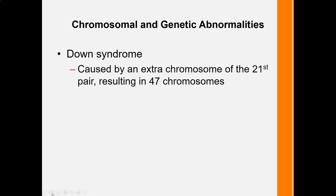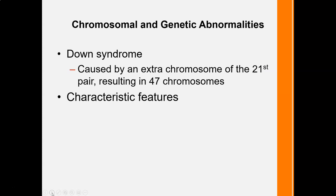Another chromosomal disorder is Down syndrome, which occurs when there is an extra chromosome on the 21st chromosome. Instead of 46 chromosomes, you find 47 — an extra chromosome on the 21st. Down syndrome is also referred to as trisomy 21, tri meaning three, a three-some chromosome on the 21st chromosome.